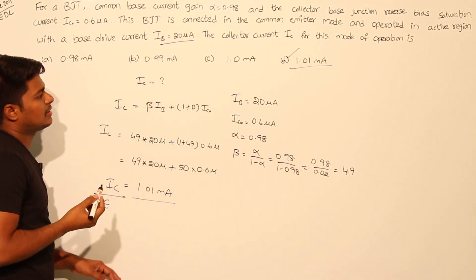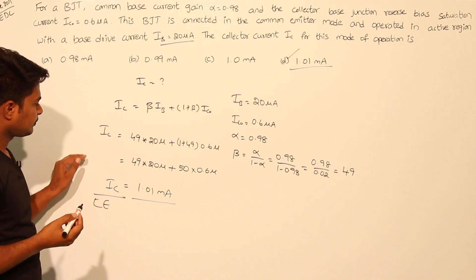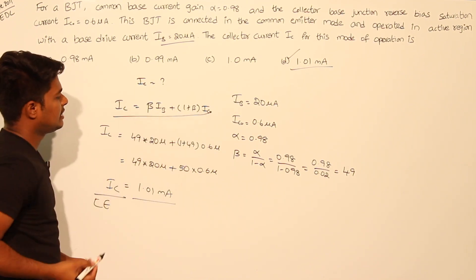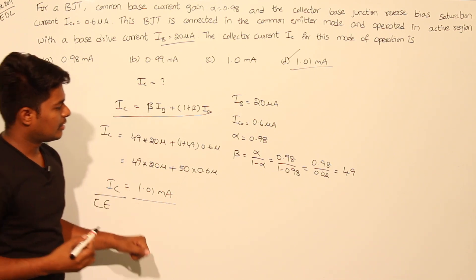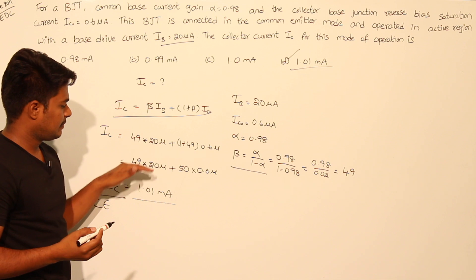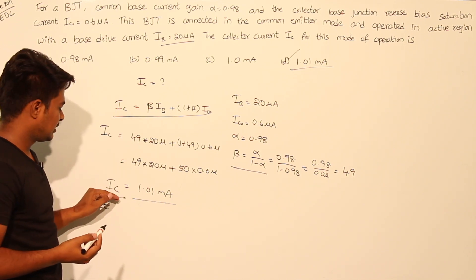You need to remember this collector current equation in CE region and you need to remember this relationship between alpha and beta. Then simply substitute this in the above equation and you will get the value of collector current.